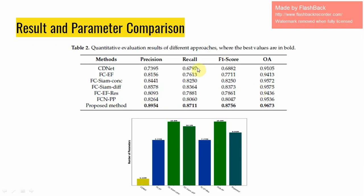In this slide, the proposed methodology's evaluation metrics are compared with six existing methods. The proposed methodology outperformed all other existing state-of-the-art methods. Even though the proposed model has fewer parameters — only 9 million — compared to methods such as FC-Siam-Conc, FC-Siam-Diff, and FC-PB, it is still able to outperform all other methods.